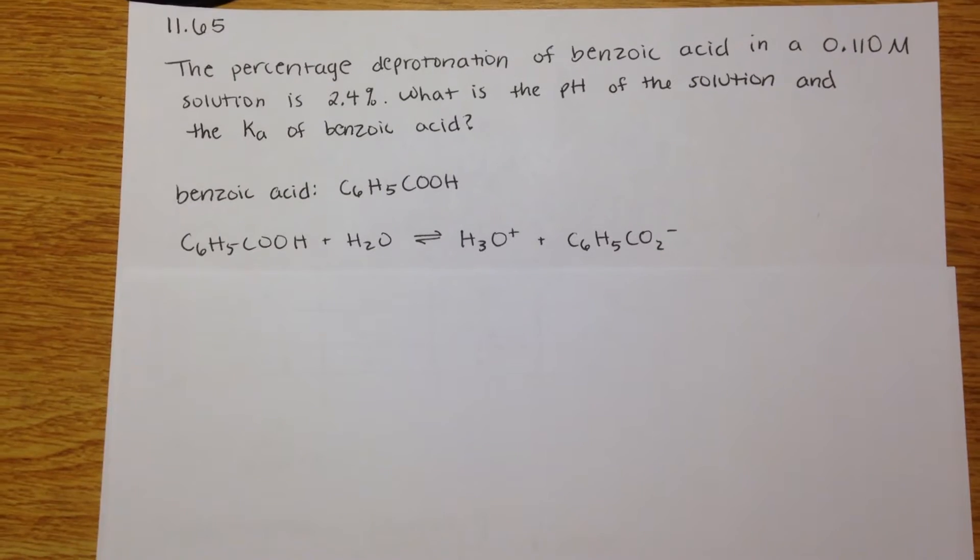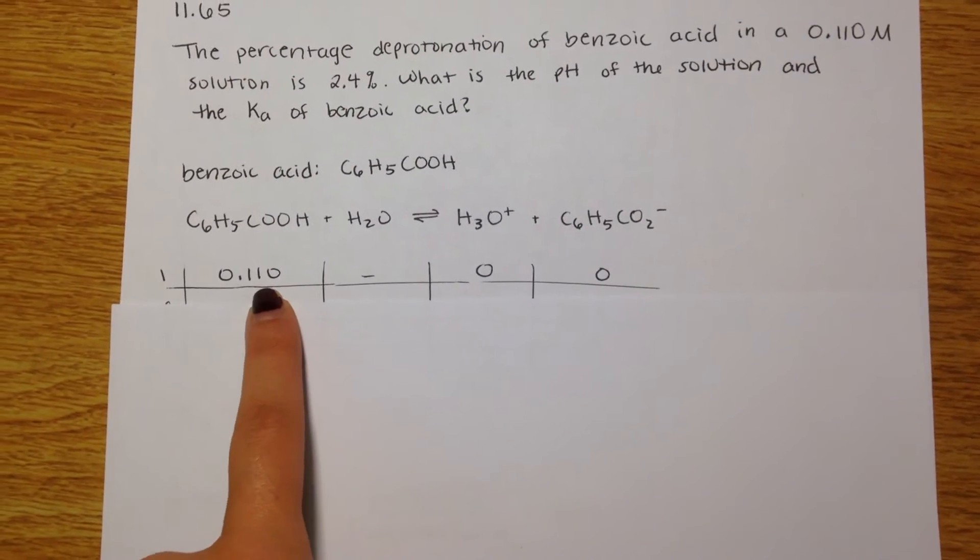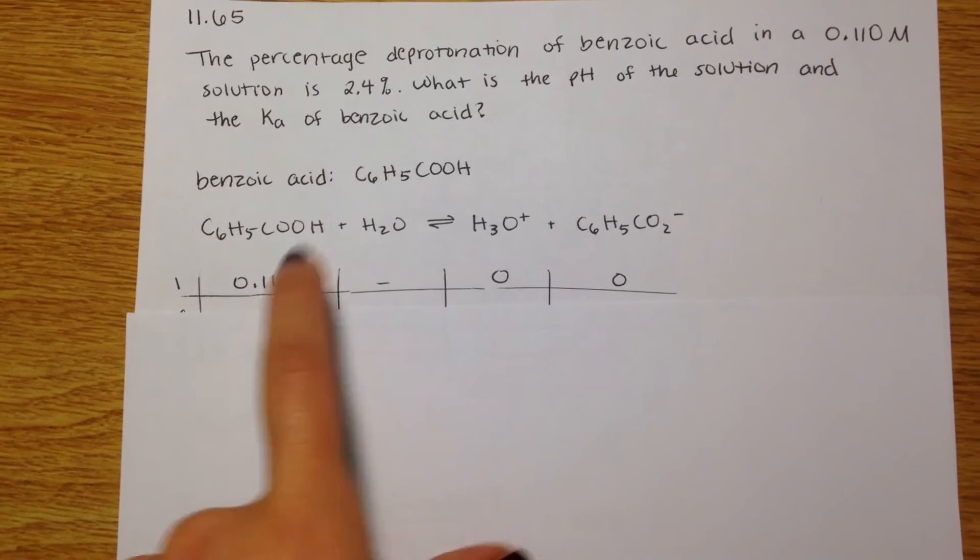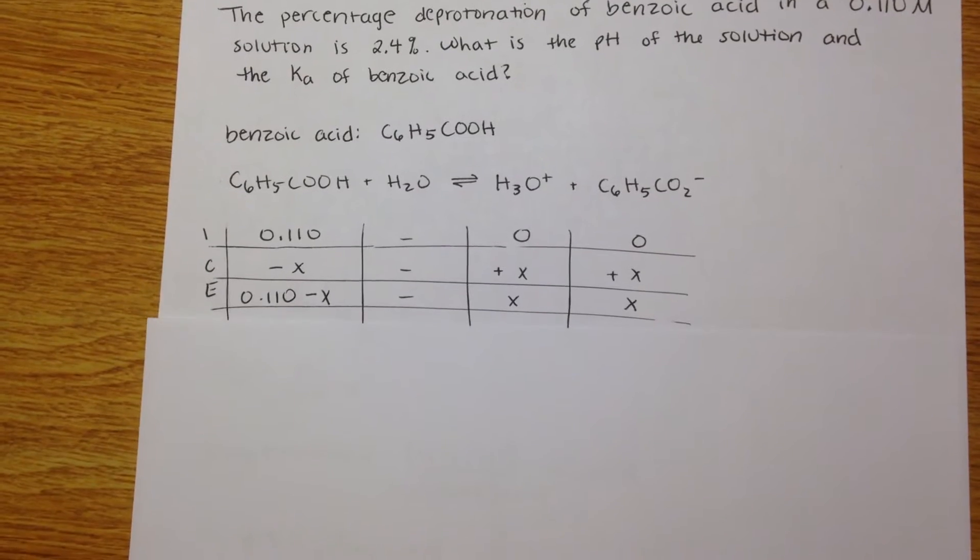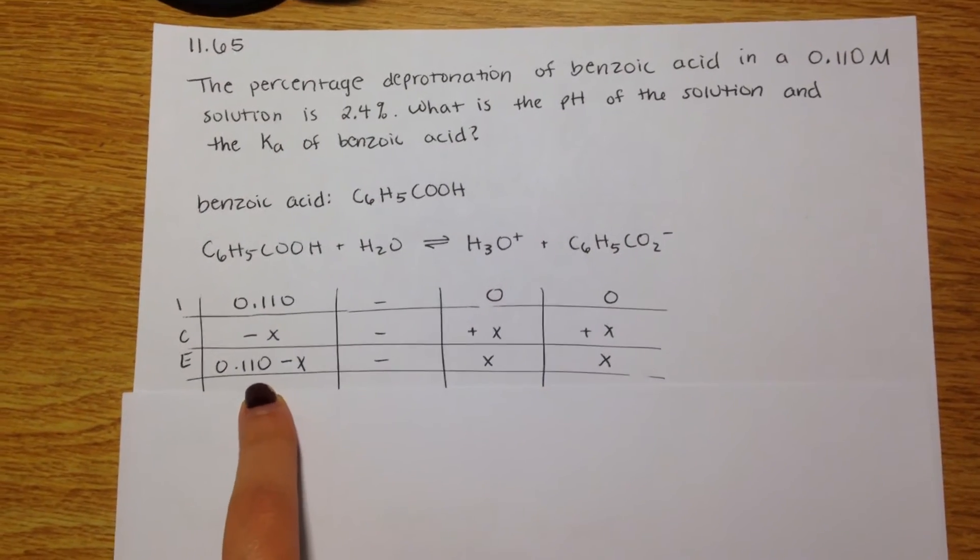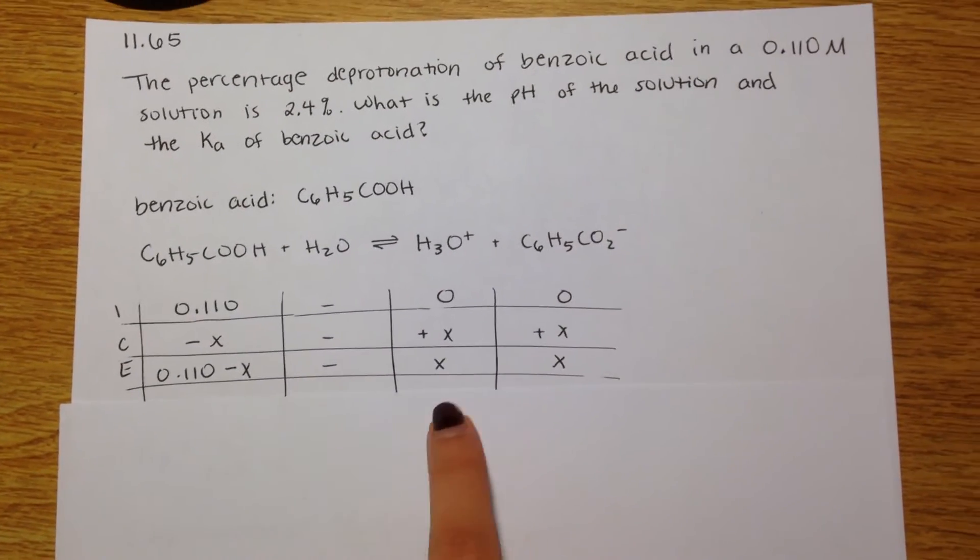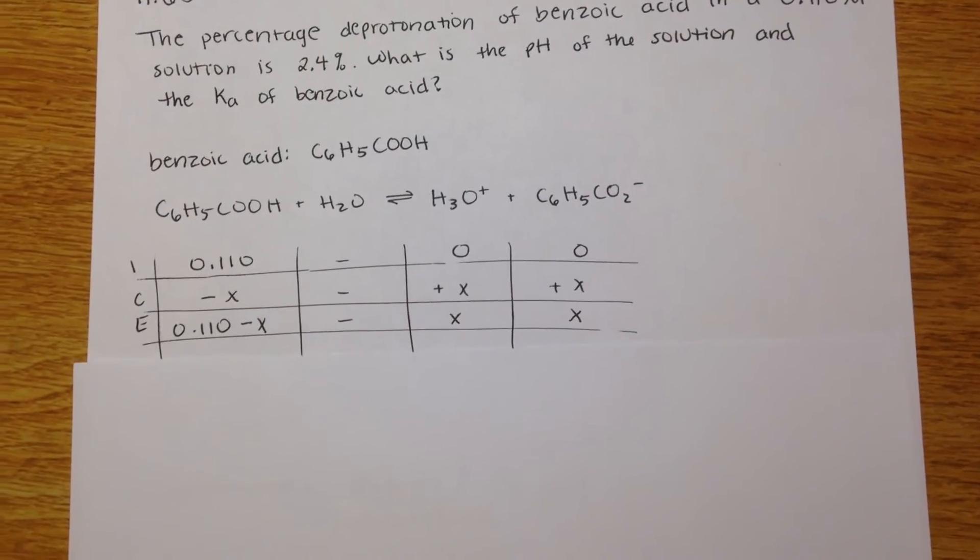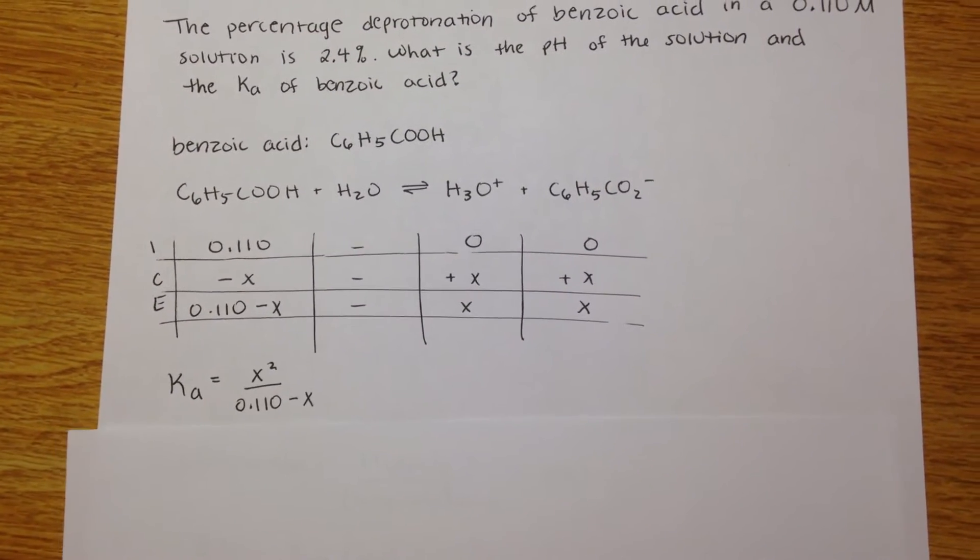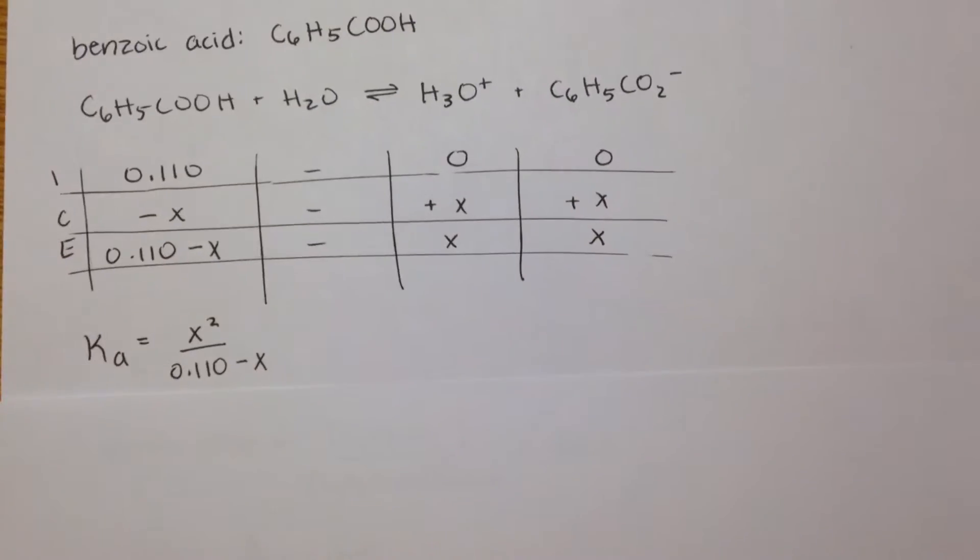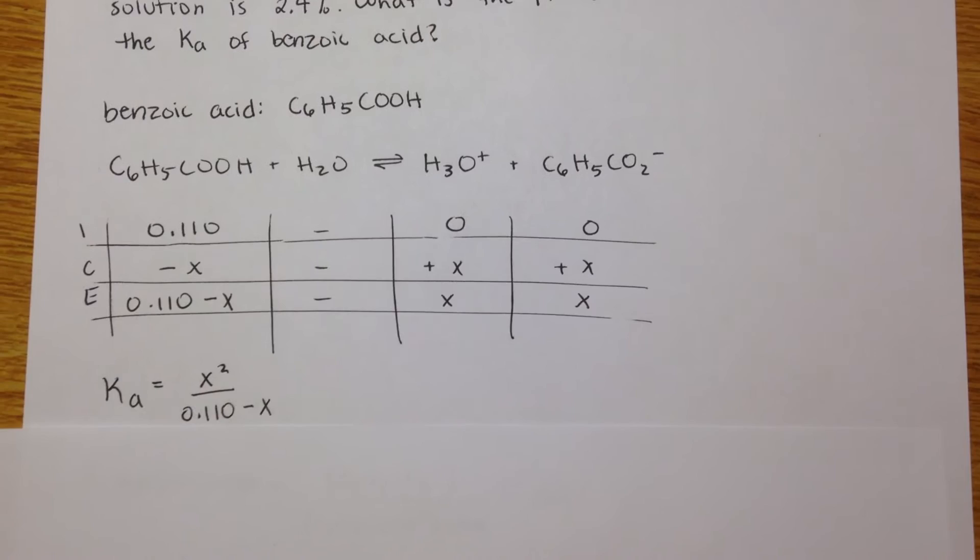So we make an ice table showing the initial concentration of benzoic acid, and then these are 0, until we get an equilibrium concentration of 0.110 minus x, x, and x for the other two. So the Ka equation for this would be the products over the reactants,